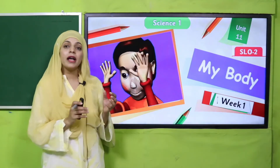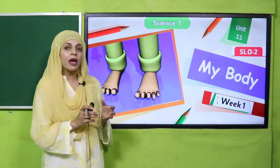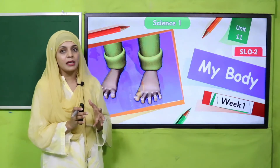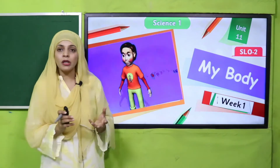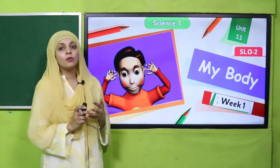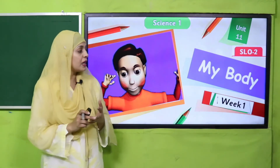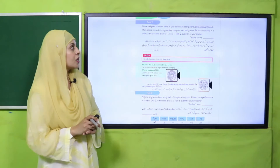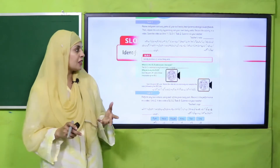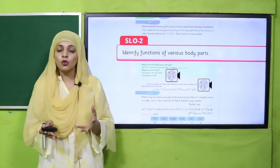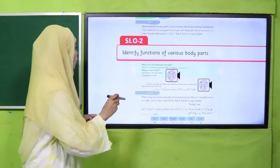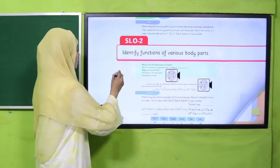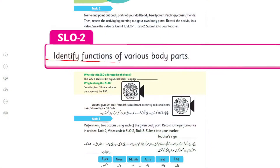SLO Number 2 — what it says and what its purpose is — we will discuss that. So 'My Body' is the name of the unit, and we are on Week Number 1. Let's quickly have a look at what SLO Number 2 says. SLO Number 2 states that the students will be able to identify functions of various body parts.